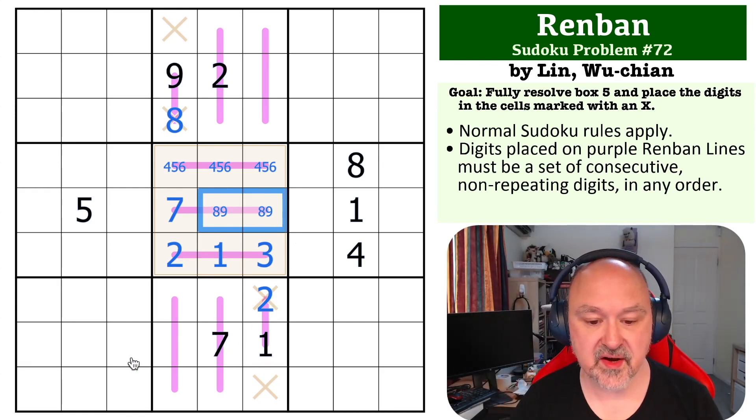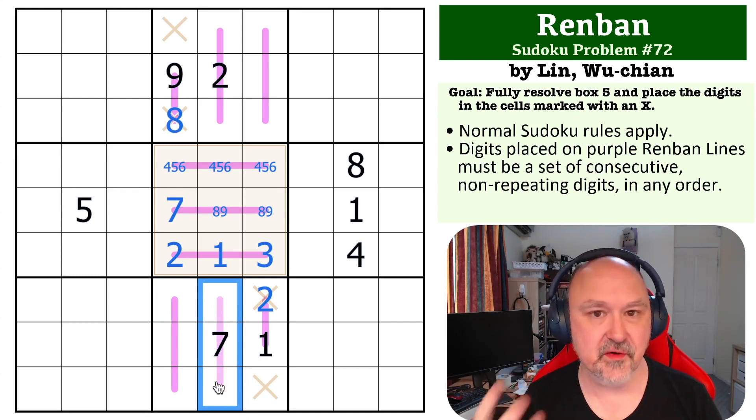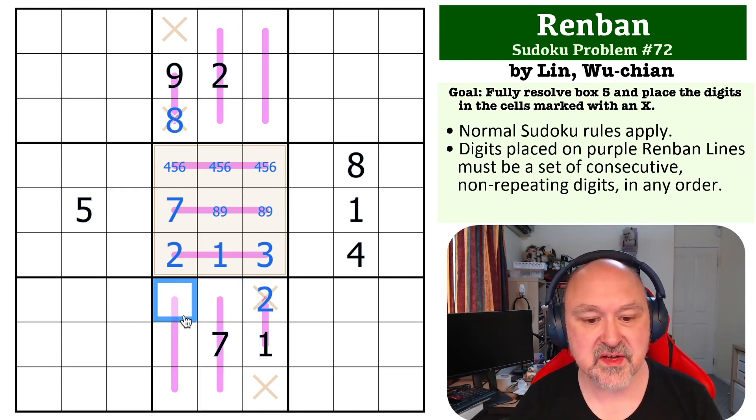Now the important question is: where does 3 go in this box? 3 can't go on a three-cell line Renban with a 7 because 3-4-5-6-7 does not fit onto a three-cell Renban. So the 3 has to go on this line, but it can't go down because the 2 is not available. So this goes 3-4-5. This is now a 3-4-5 line.